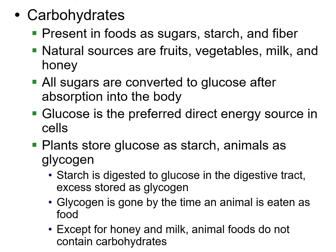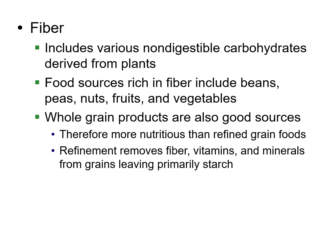One of the biggest nutrient groups we think of is carbohydrates, and glucose is the key one. Plants store carbs as starch; animals store them as glycogen. We get carbs from natural food sources like fruits, vegetables, milk, and honey. Most animal foods do not contain carbs except for those. Once we consume them, our body stores them as glycogen.